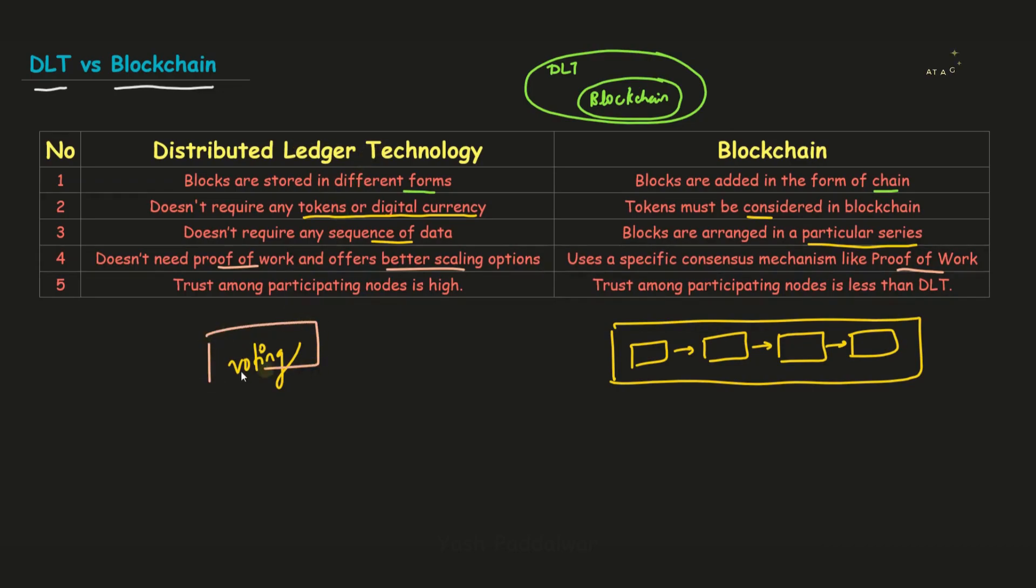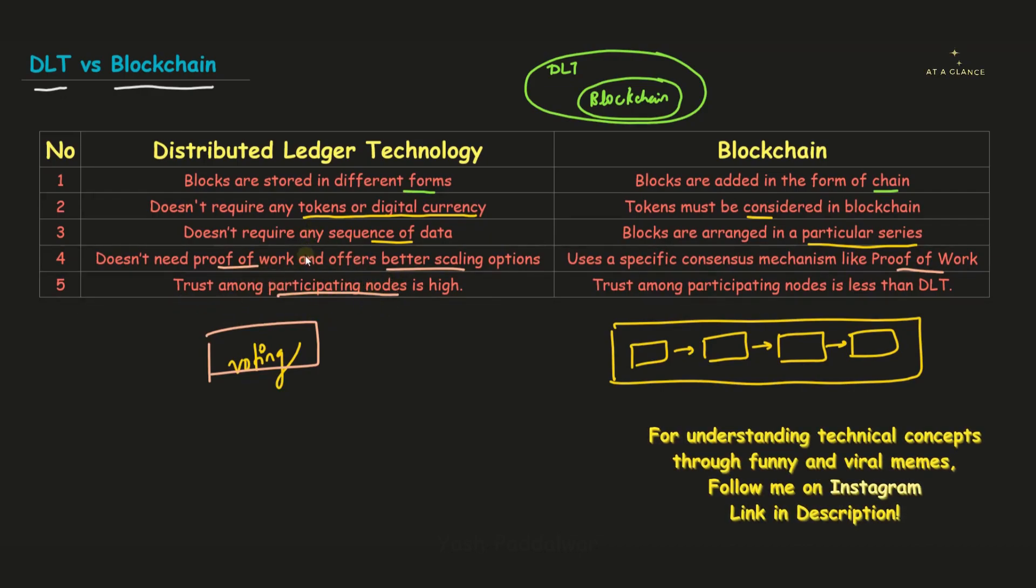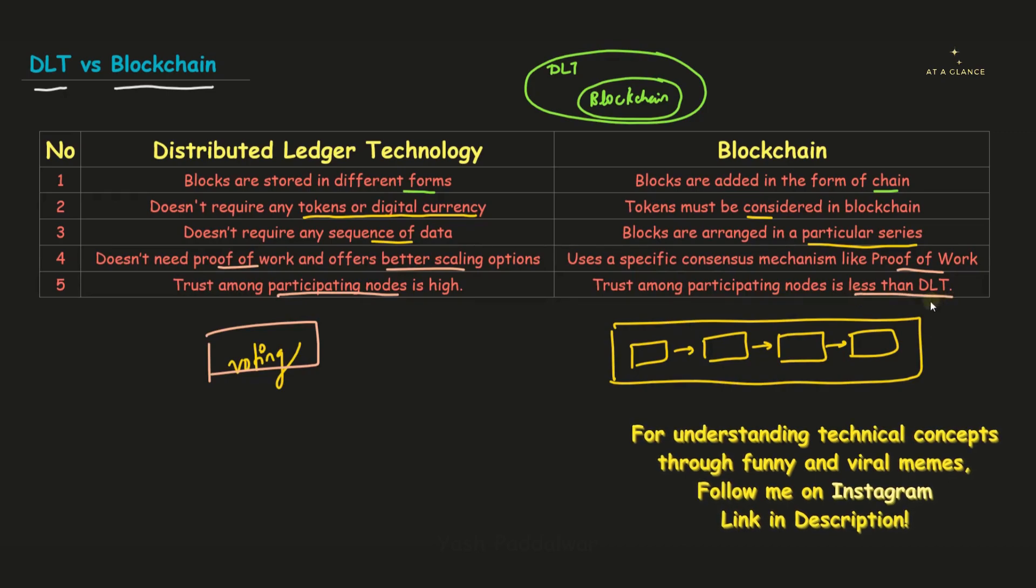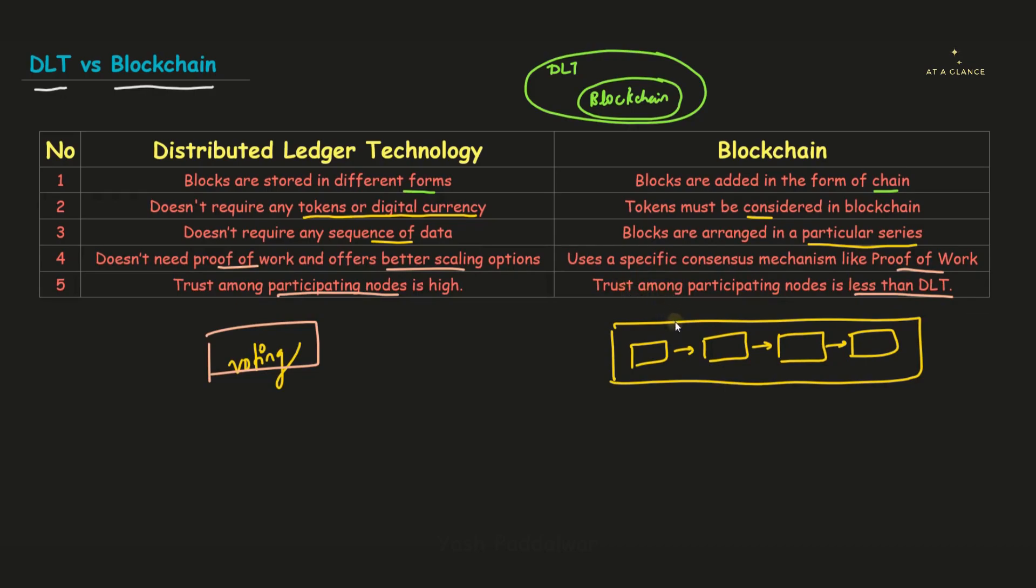Now in distributed ledger technology, the trust among participating nodes is very much high. How exactly this trust is developed? It is developed because of the mechanism that it uses. But when we talk about blockchain technology, the trust among the participating nodes is less than the distributed ledger technology. And that is why it has to have the consensus mechanism so that every single node can reach to a common agreement. So now I hope the difference between DLT and blockchain is clear to you.